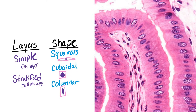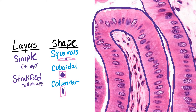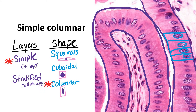Here, we once again have multiple single layers of cells, so it is simple. And when we look at the shape of those cells, they are very clearly little rectangles. And if you couldn't see the little rectangular shapes, you still see those oval nuclei, which tells you it is simple columnar.